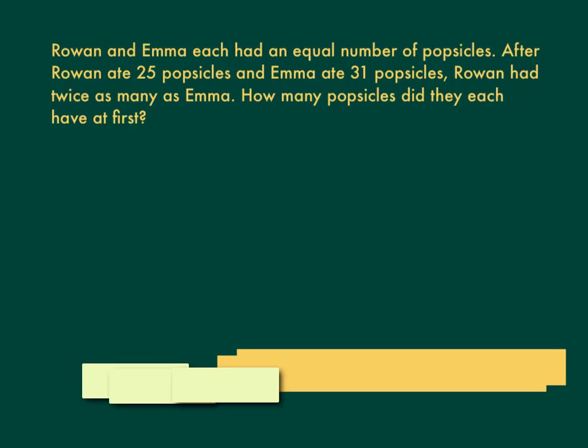Rowan and Emma each had an equal number of popsicles. After Rowan ate 25 popsicles and Emma ate 31 popsicles, Rowan had twice as many as Emma. How many popsicles did they each have at first?